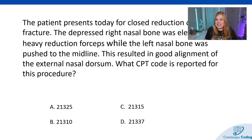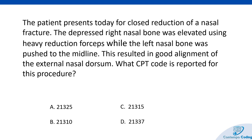Now let's get into some CPT coding. A patient presents for closed reduction of a nasal fracture. The depressed right nasal bone was elevated using heavy reduction forceps while the left nasal bone was pushed to the midline, resulting in good alignment of the external nasal dorsum. What CPT code is reported? Key terms to highlight here: this is a closed reduction, and it's a nasal fracture. Those are probably the first things to look for — closed reduction of nasal fracture — and then see if there's something more specific like depressed nasal fracture, with forceps, or pushed to midline.